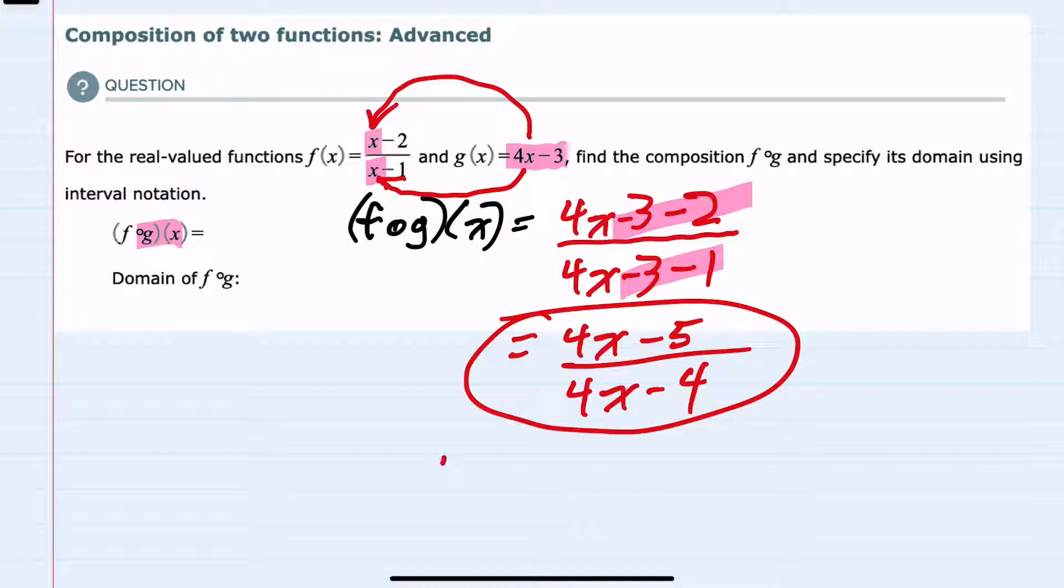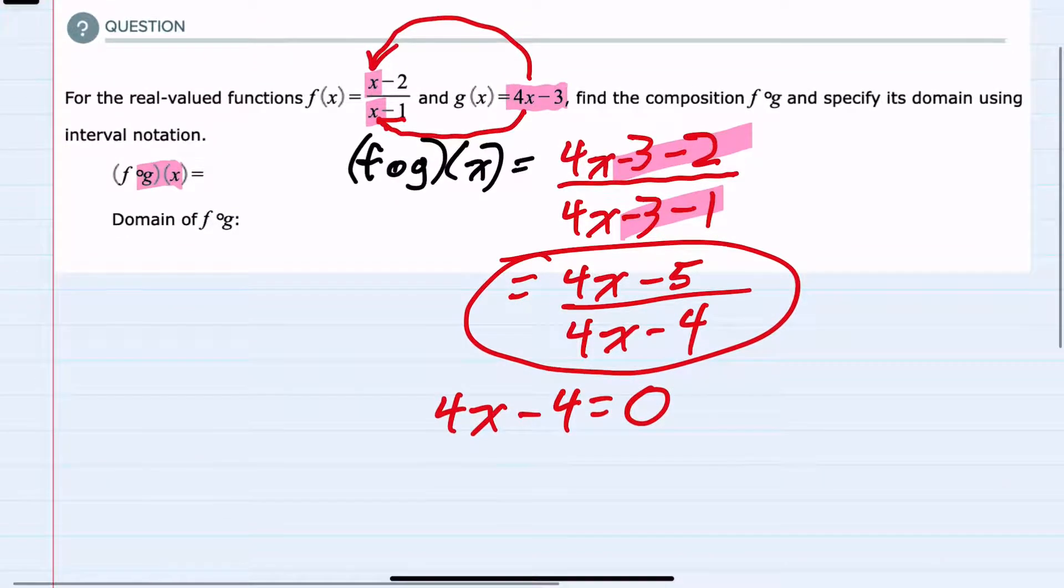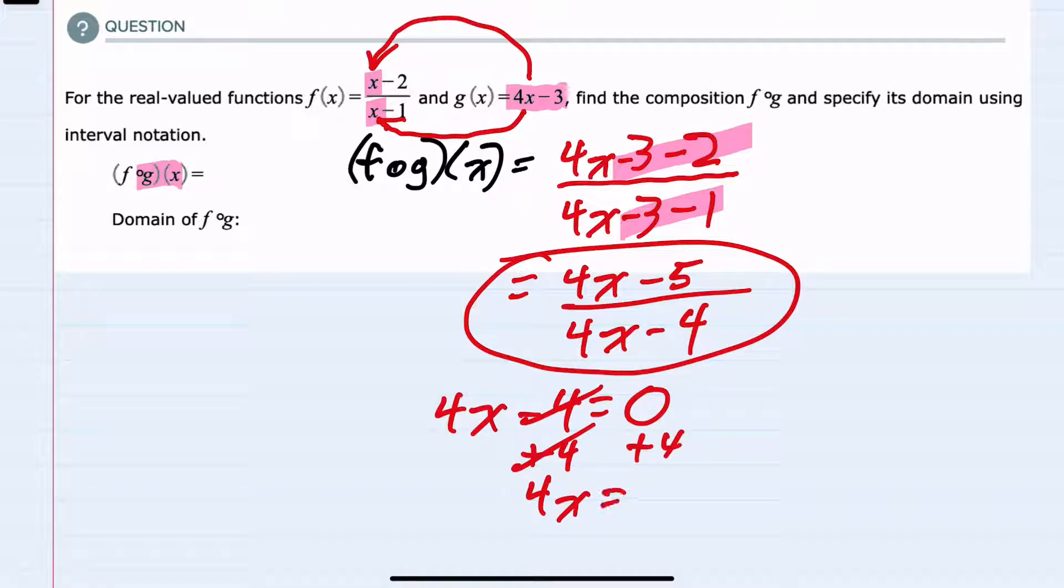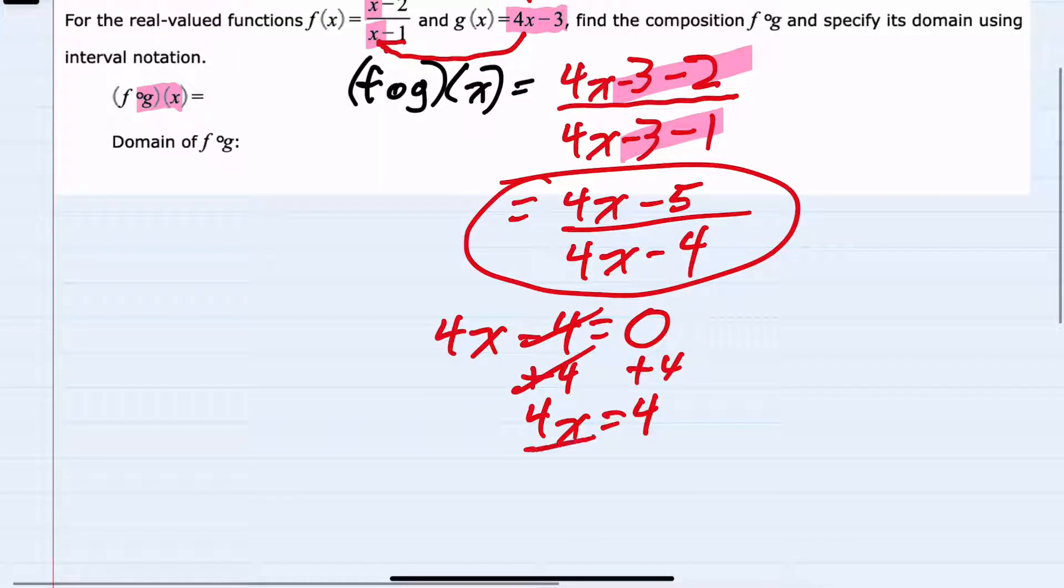So where does 4x minus 4 equal 0? Solving for x, I can see that I would add the 4 over, 4x equals 4, and divide by 4, x equals 1.